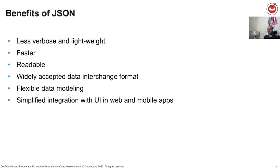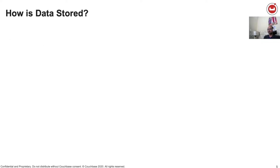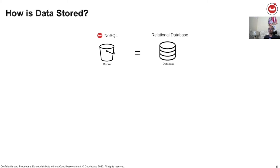Let's now see how data is stored in Couchbase. For those who have been using Couchbase, you'd already be familiar with Bucket. For those who do not, Bucket is simply a container that stores documents. If you're coming from a relational database background, it's somewhat similar to a database. Within Bucket, you can choose to store data either on disk or in memory or both depending on the type of bucket you choose. Grouping documents inside Bucket are usually done by adding a type field to the document.